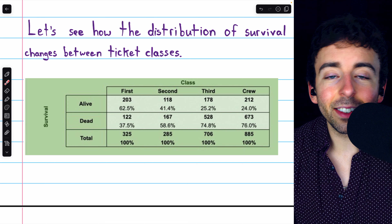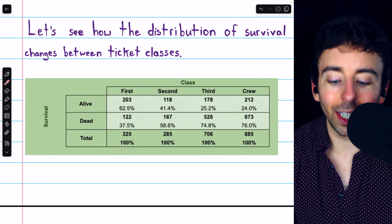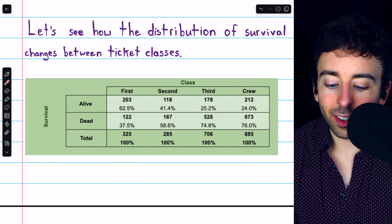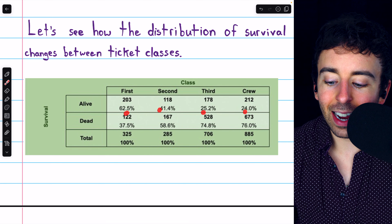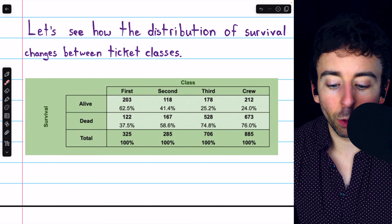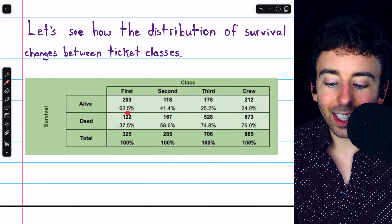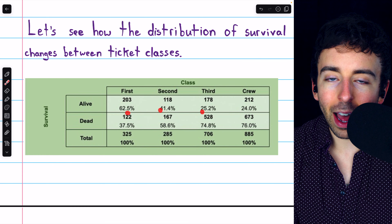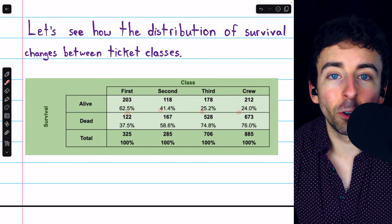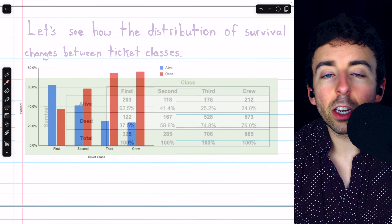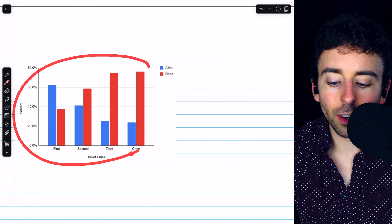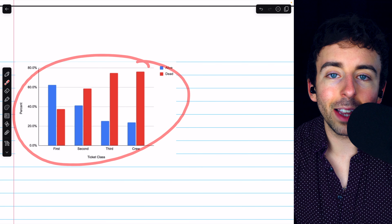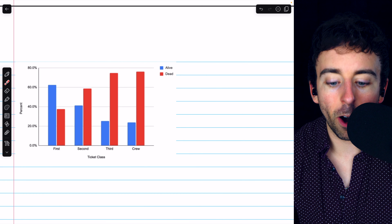This makes it pretty clear that indeed, ticket class and survival status are related. You can see, as we go down from first, second, third, and crew, the likelihood of survival decreases. We can drive this point home further with what's called a side-by-side bar chart.